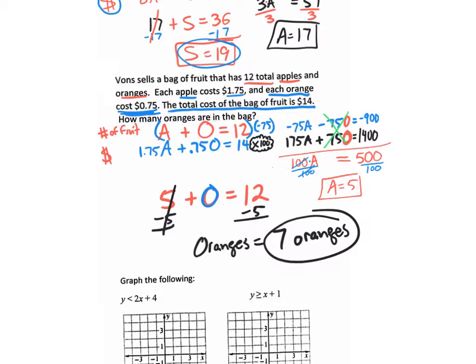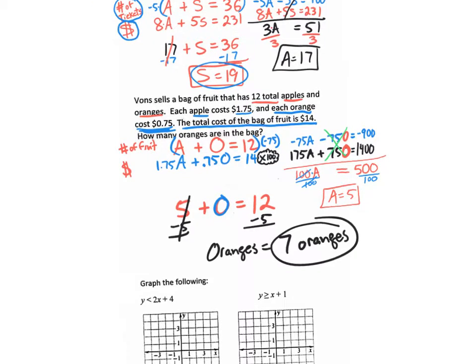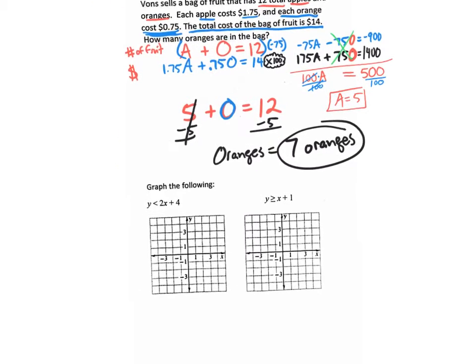There will be two of these word problems on the test on Monday. You're always creating an equation based on the number of items — maybe fruit, maybe tickets — and another equation based on money. That's how it's going to be on the test.